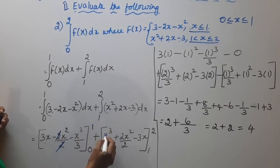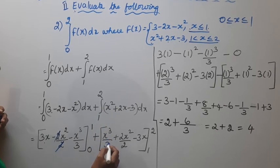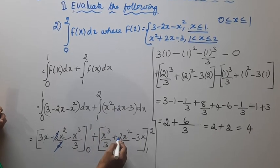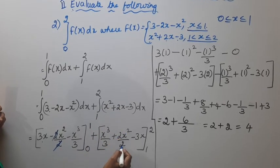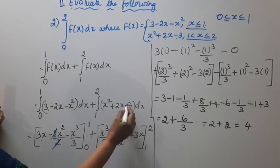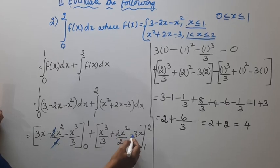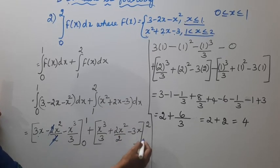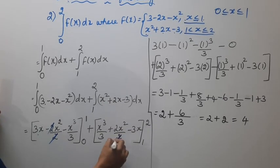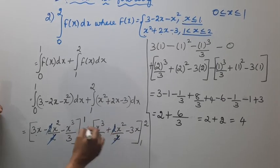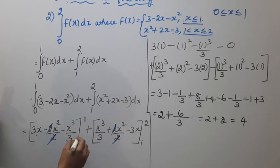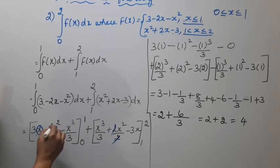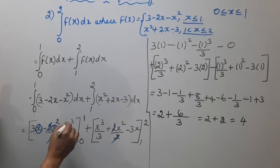For the second part, integrate (x² plus 2x minus 3) from 1 to 2. x² integrates to x³/3, 2x integrates to 2x²/2, and 3 integrates to minus 3x, evaluated from 1 to 2. The 2s cancel.